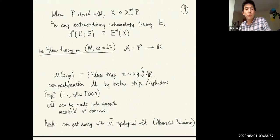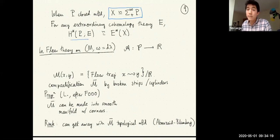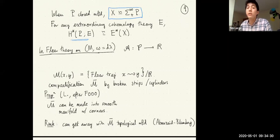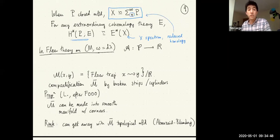Cohen-Jones-Segal prove that if P is a closed manifold, then X is equivalent to the suspension spectrum of P with a disjoint base point. In particular, for any extraordinary cohomology theory E, the cohomology of P with coefficients in E is isomorphic to E evaluated on X, where X is a spectrum. This is always a reduced homology theory.